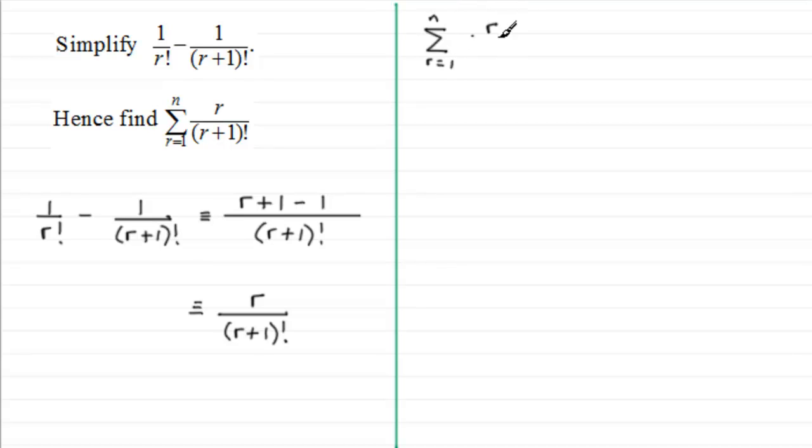Well, we've seen that this is exactly the same as summing again from r going from 1 to n, but this expression here is the same as what we've got here: 1 over r factorial, let's just pop it in here, 1 over r factorial minus 1 over (r+1) with the factorial there. Okay, now all we need to do is just substitute r equals 1, then r equals 2, and so on, all the way through summing up until we get to r equals n.